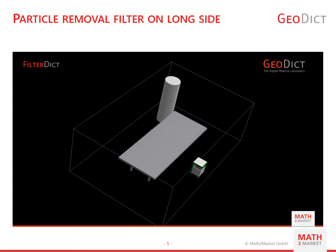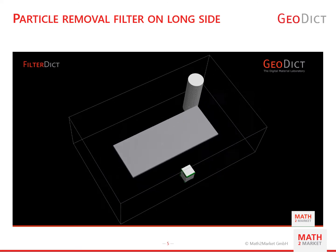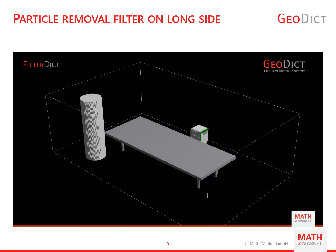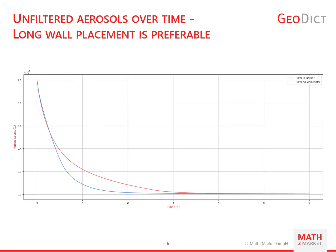At first, it seems to work very similar to the previous position. But when we look into the results in more detail, we see that the air purifier works much better when placed in front of our door than when placed in the corner. Starting in both cases with a million molecules, the red curve shows the reduction for the corner position, while the blue curve shows the reduction for the wall-centered position. The desirable removal of about 90% of the aerosols can happen in 90 minutes for the better position compared to about three hours for the corner position.